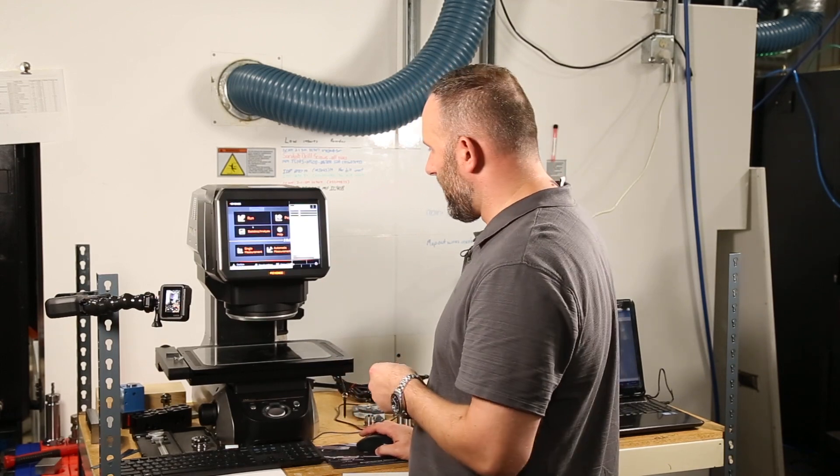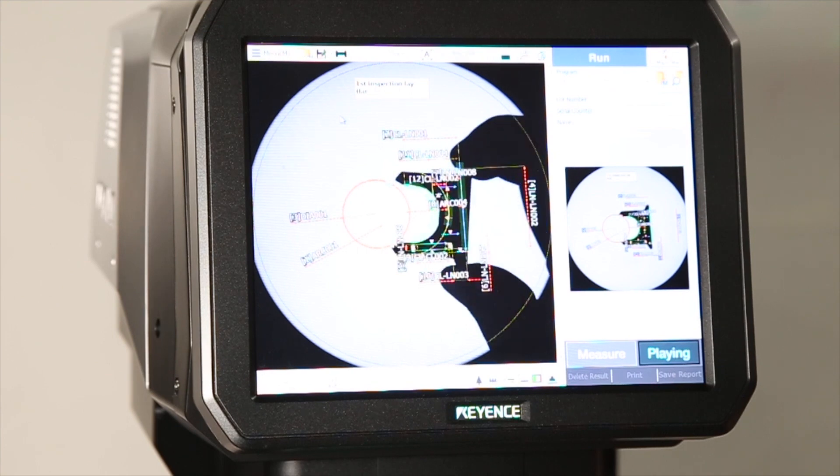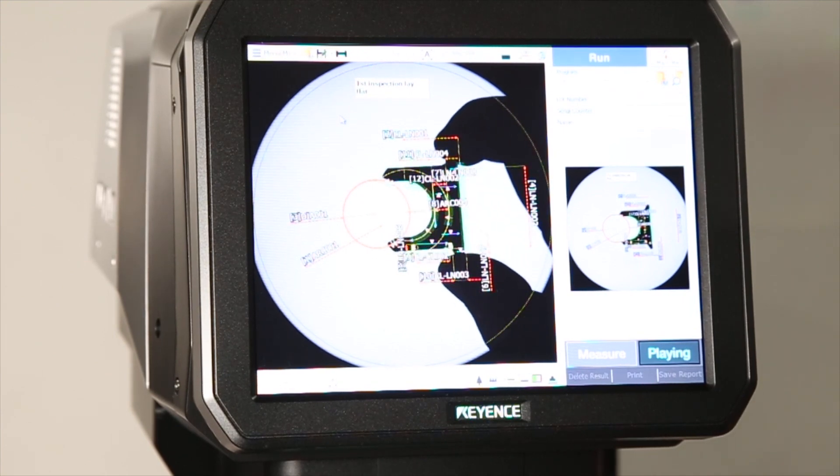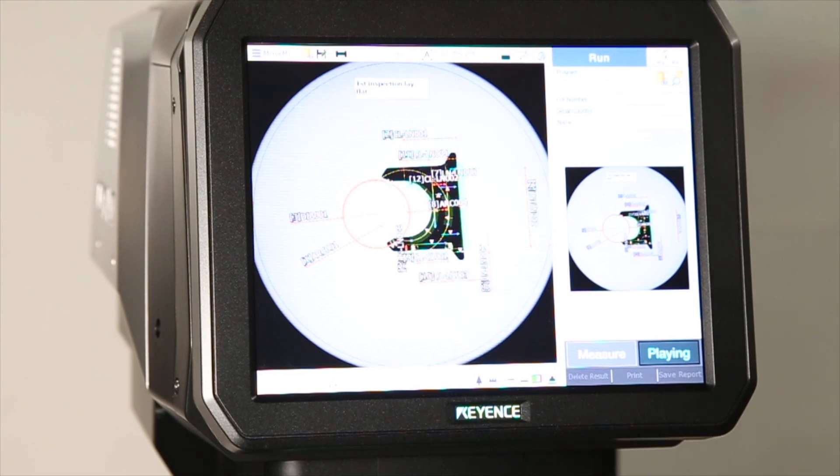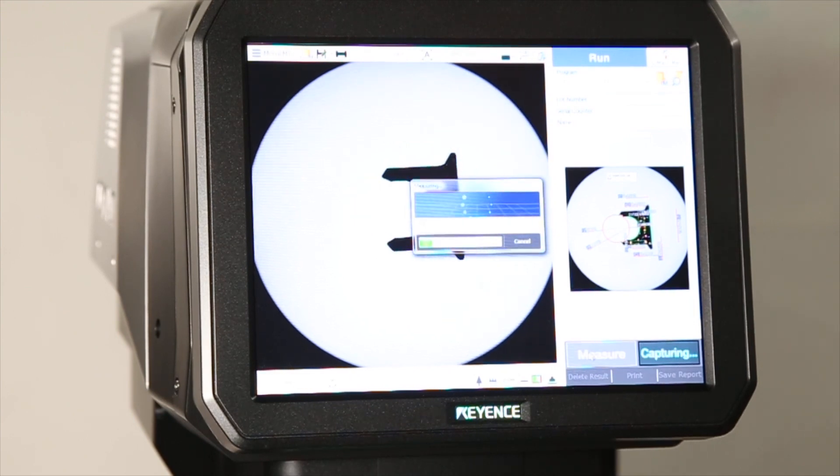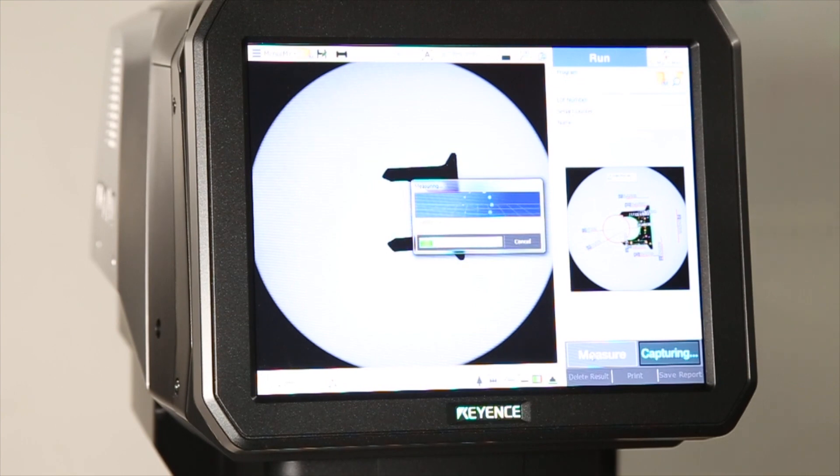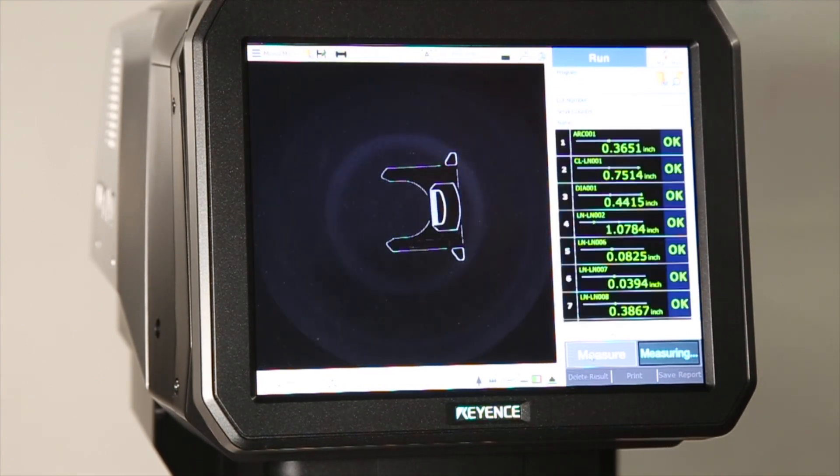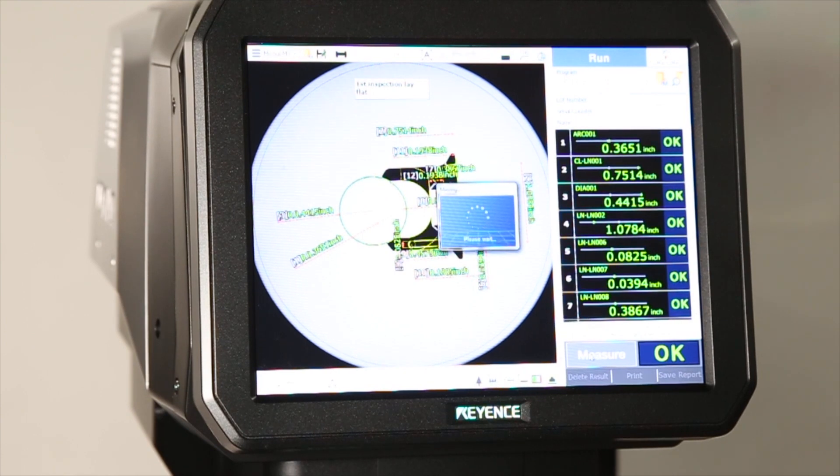So if I click run here, I can put the part on the stage, position that part in the vicinity where it wants to be, click measure, and the head will come down with a light and use light to get the level of accuracy and measurement that it needs.